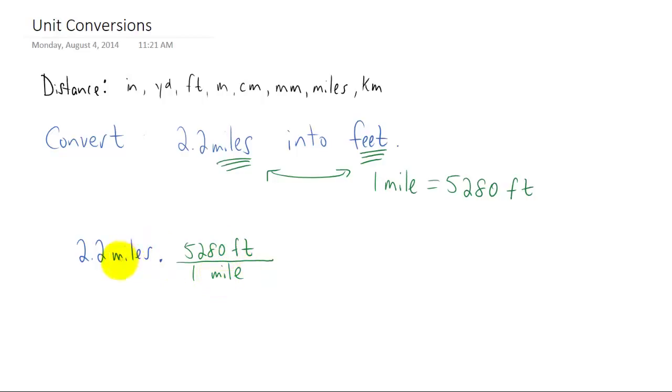So in this example we wanted miles to cancel out, and they do because you have miles in the numerator and miles in the denominator. The unit that we're then left with is feet, exactly what we're looking for. So then all we have to do is multiply these fractions out. We can think of 2.2 as 2.2 over 1, and all we have to do is multiply 2.2 by 5280 to get our answer. And if I did my multiplication correctly, it should end up with 11,616 feet. So we've determined that 2.2 miles is the exact same thing as 11,616 feet.